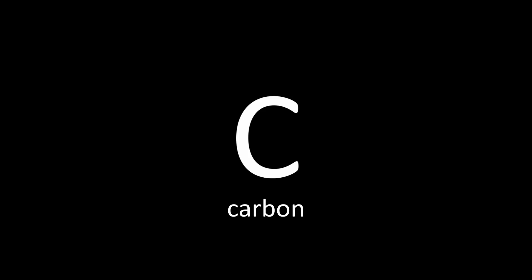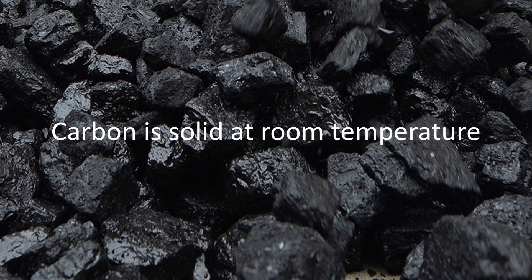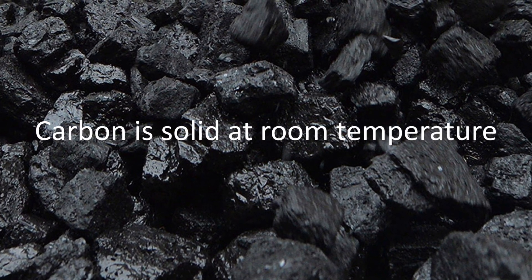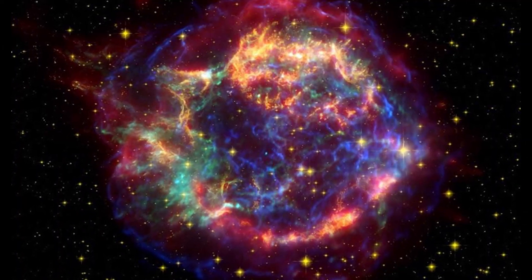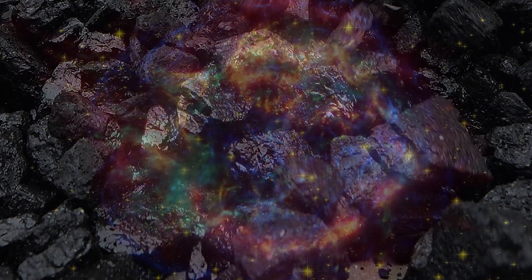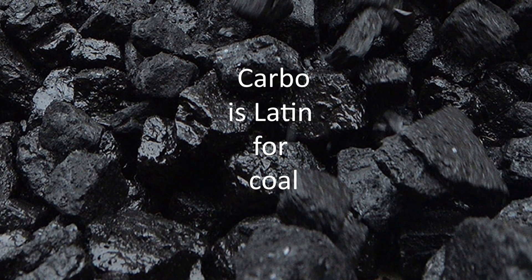Let's start with some basic facts about carbon. The atomic symbol is C. The atomic number of carbon is 6, which means it has 6 protons. The atomic mass of carbon is 12, meaning all carbon atoms have 6 protons and most isotopes of carbon have 6 neutrons. There are other isotopes of carbon; two commonly known ones are carbon-13 and carbon-14. Carbon is a solid at room temperature, it is the 6th most abundant element in the universe, and the name carbon comes from the word carbo, which is Latin for coal.